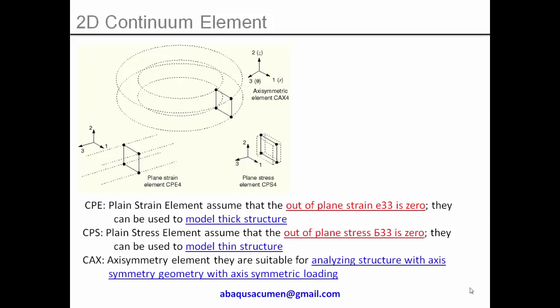Abacus has three element types in this domain: plane strain, plane stress, and axisymmetry. In today's session you'll learn where to use these elements to reduce big problems into smaller ones and get reasonably accurate answers. There are a lot of 3D problems which you can simplify using these elements and still get very accurate results. The three elements are: plane strain (CPE4), plane stress (CPS4), and axisymmetry (CAX4).